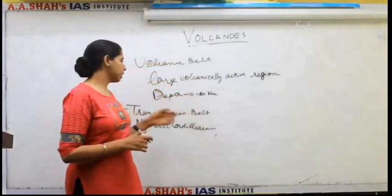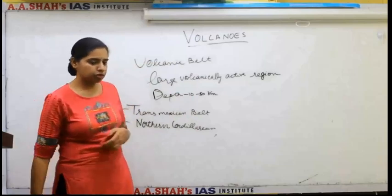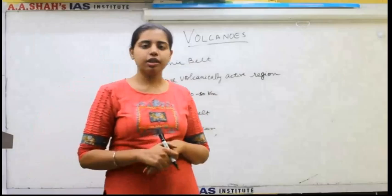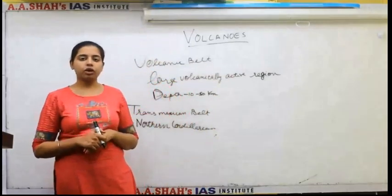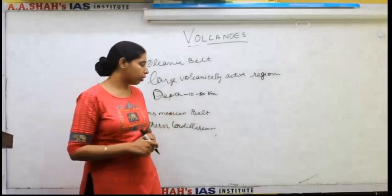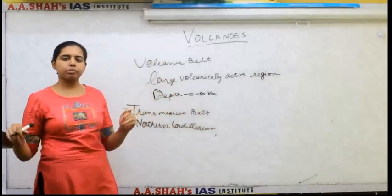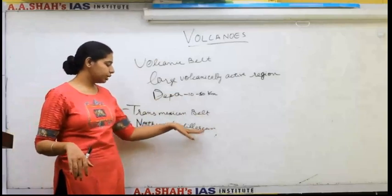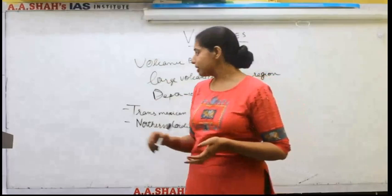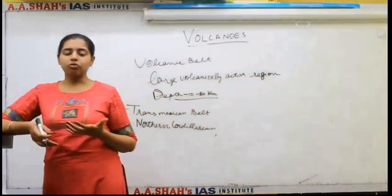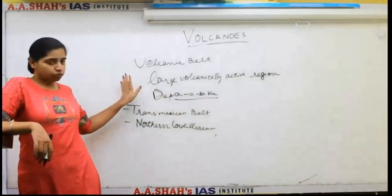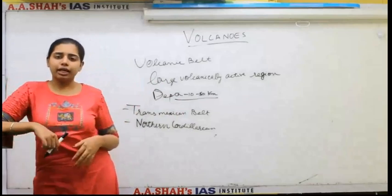Another topic in our syllabus is volcanic belts. A volcanic belt is a large volcanically active region — basically a type of region found on some plate boundaries. Because of plate tectonics, certain regions on plate boundaries show active volcanism. Examples include the Pacific Ring of Fire, the Trans-Mexican Volcanic Belt near the Central-Southern Mexican border, and the Cordilleran Volcanic Province in western Canada. These belts can have a depth of 10 to 50 kilometres. Volcanic belts are somewhat like mountains, but these mountains are not formed by folding or faulting — they are volcanic mountains.